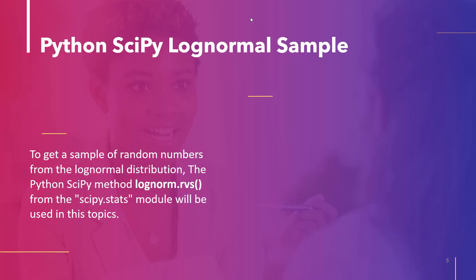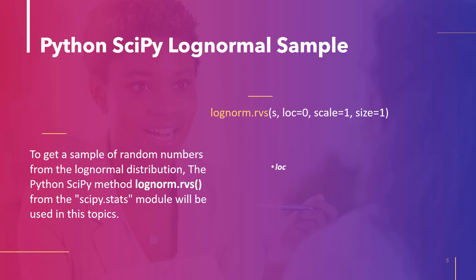The next topic is Python SciPy log normal sample. To generate random numbers as a sample of the log normal distribution, we use the method lognorm.rvs in Python SciPy from scipy.stats. Its parameters are: loc — used to provide the mean with a default value of 0; scale — to indicate the standard deviation of the sample; size — the size of the sample; and s — the shape parameter for the log normal distribution.